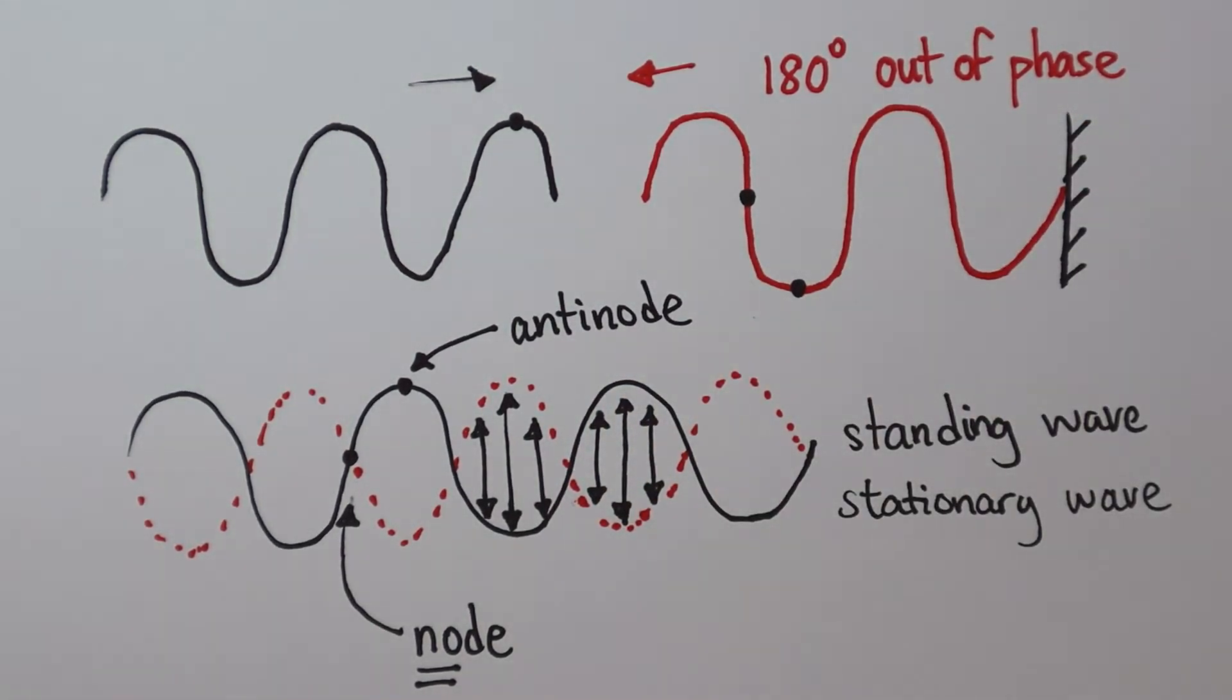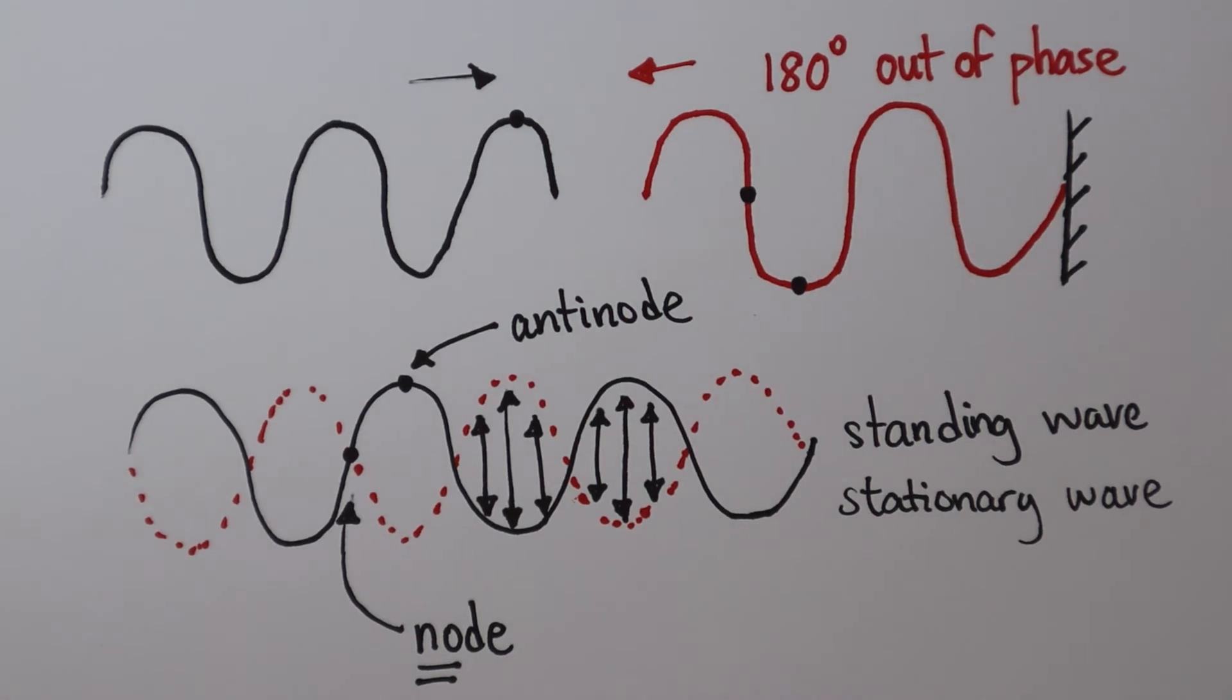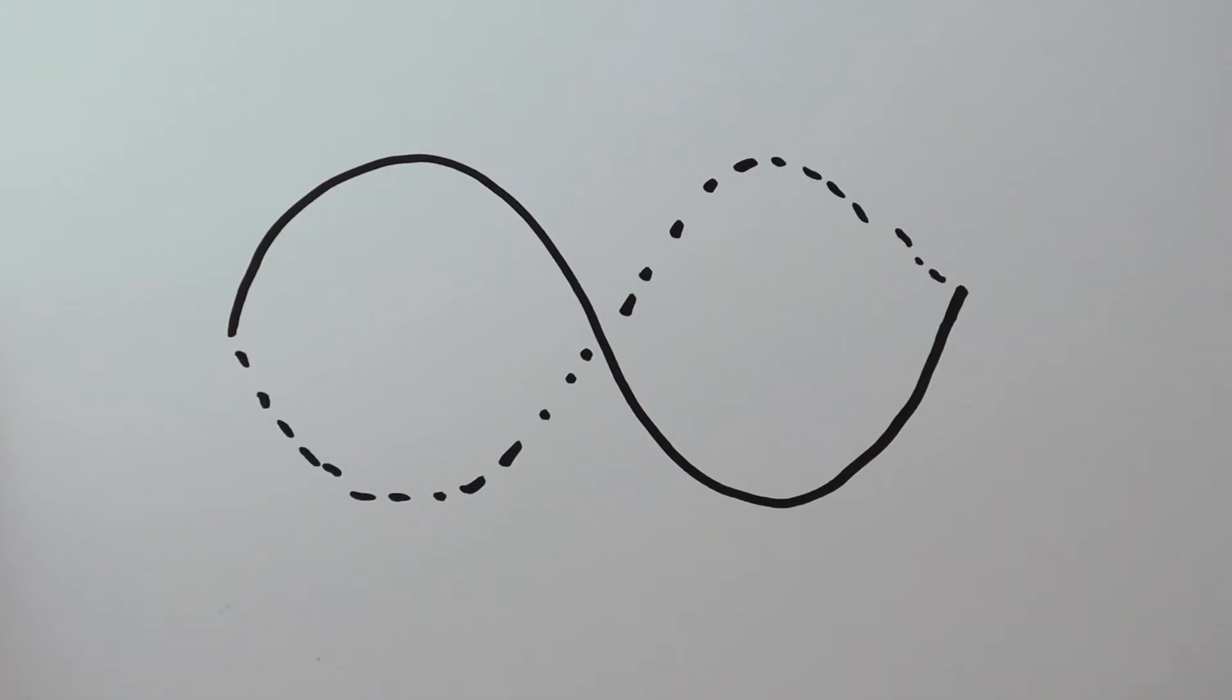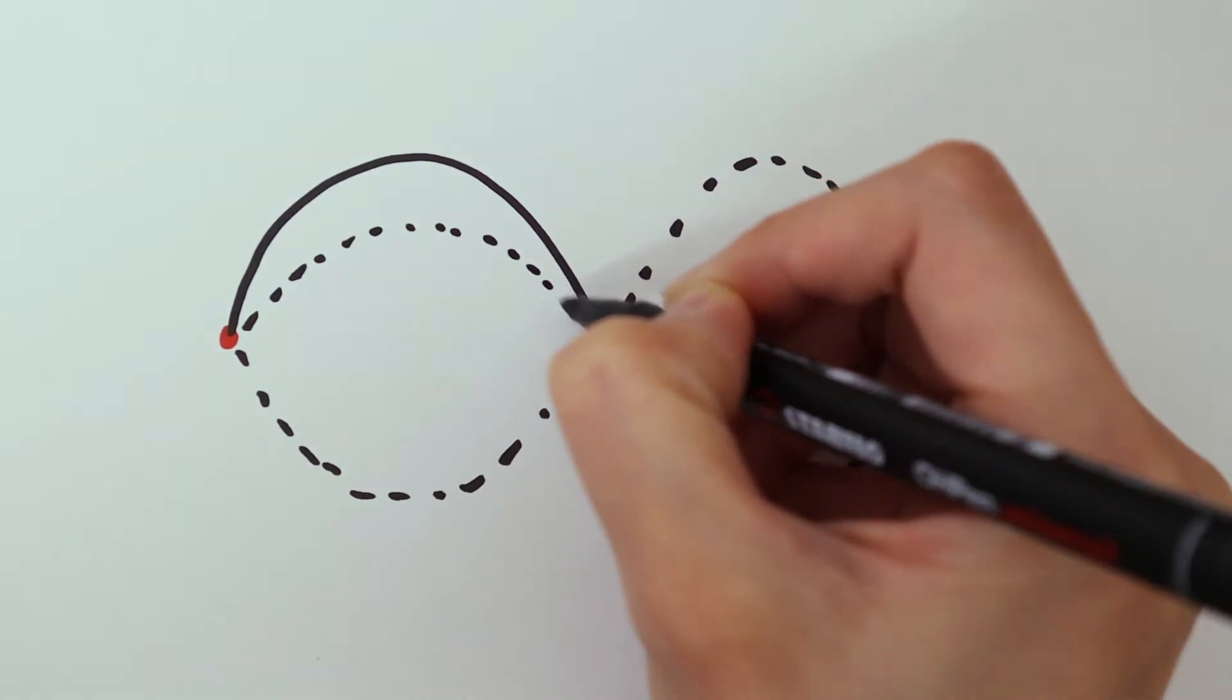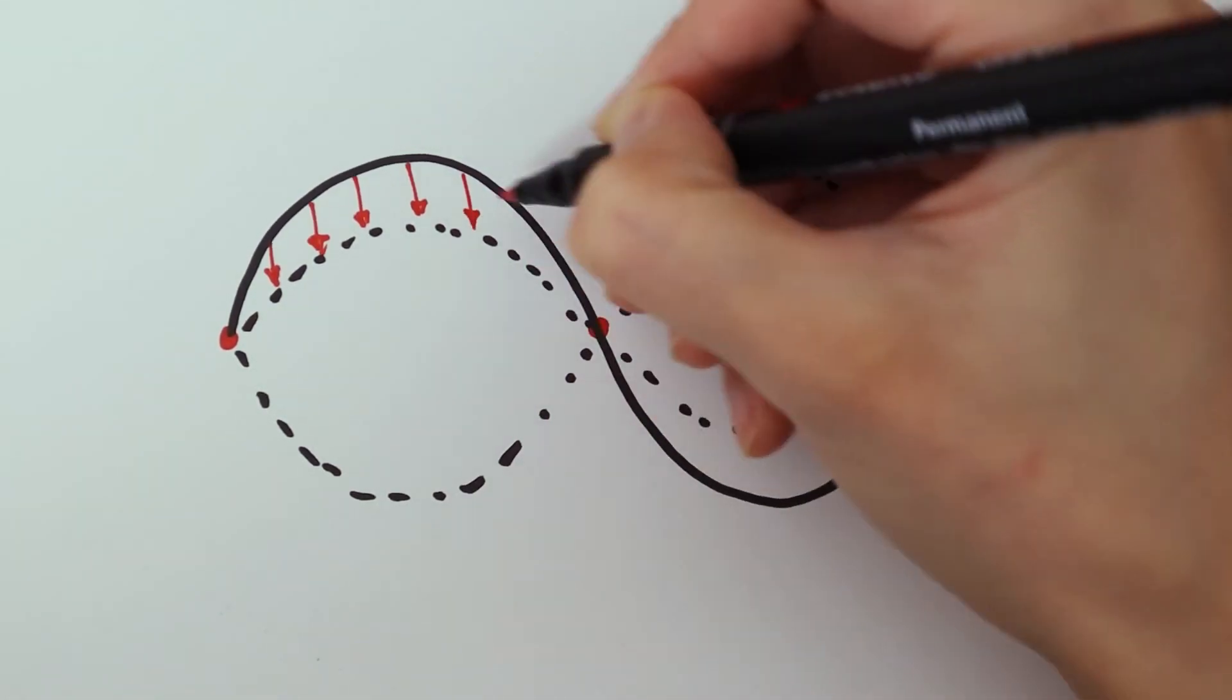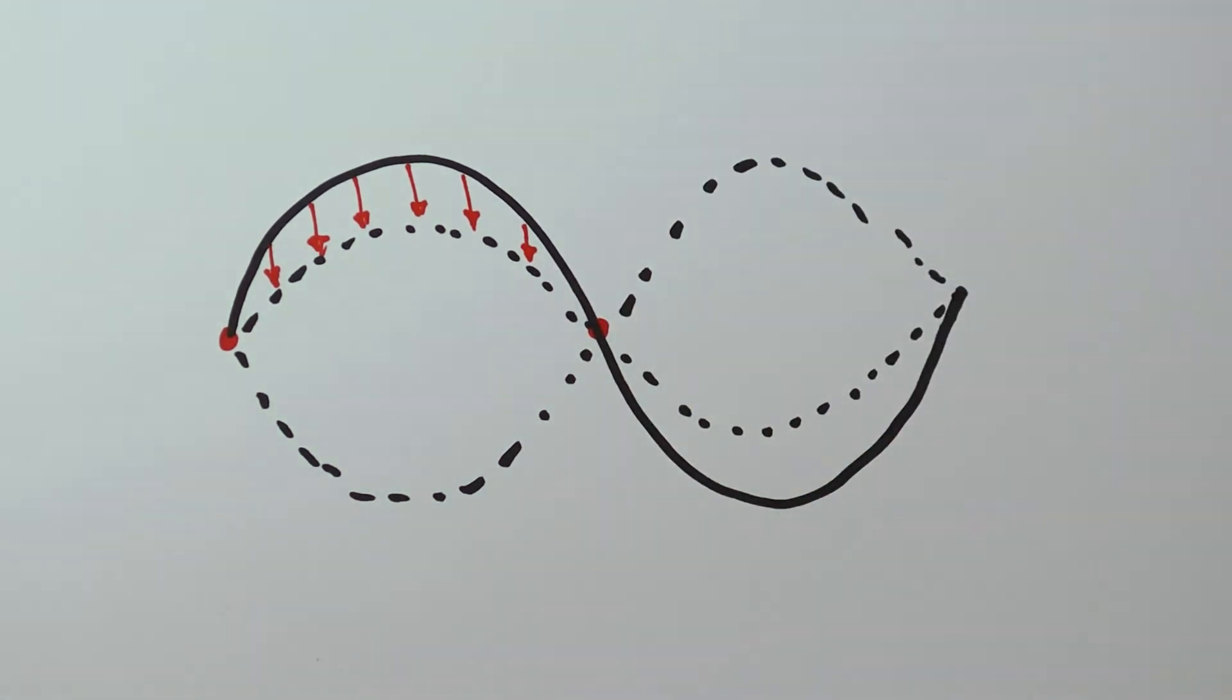Let's look more closely at what the particles are doing between two nodes. Between two adjacent nodes, all these particles are at maximum disturbance. That's because at the next instance in time, they will all move downwards.